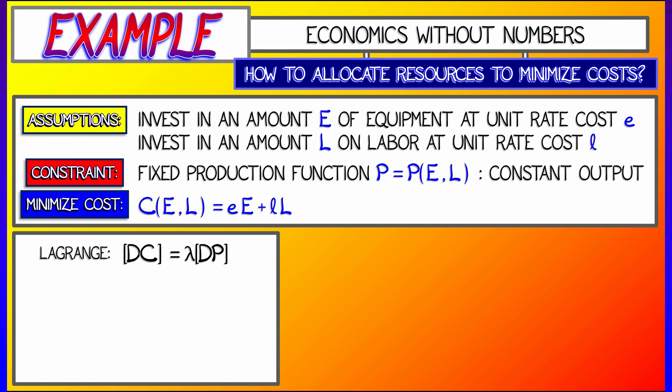The variables are big E, big L. Let's set DC equal to lambda times DP and work one variable at a time. Taking derivatives with respect to the amount of equipment I get on the left-hand side literally the equipment cost rate.